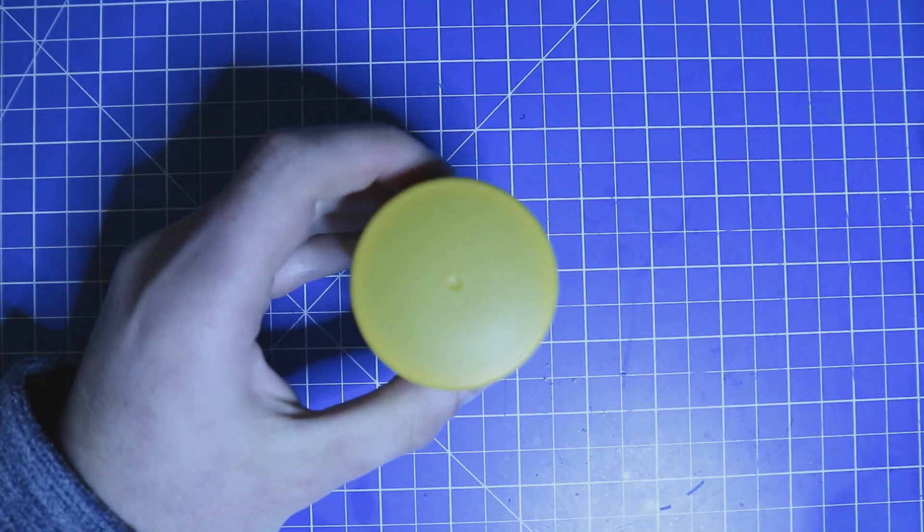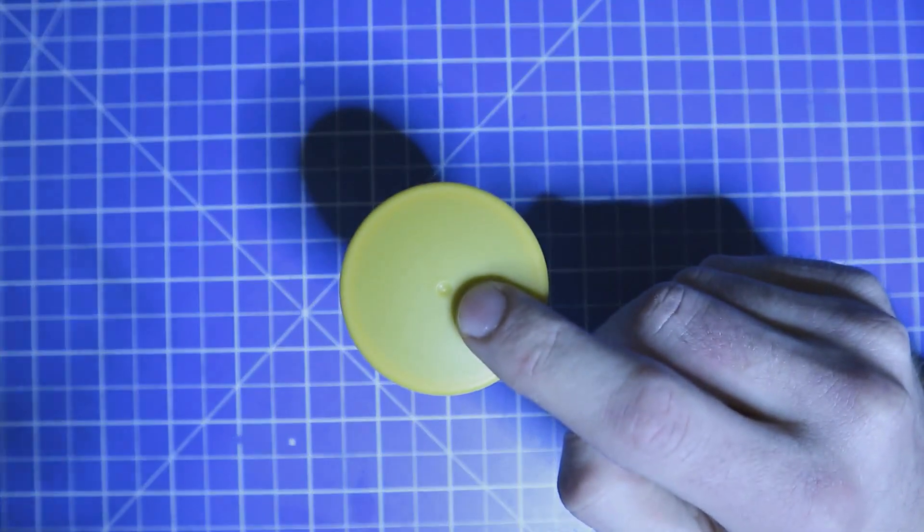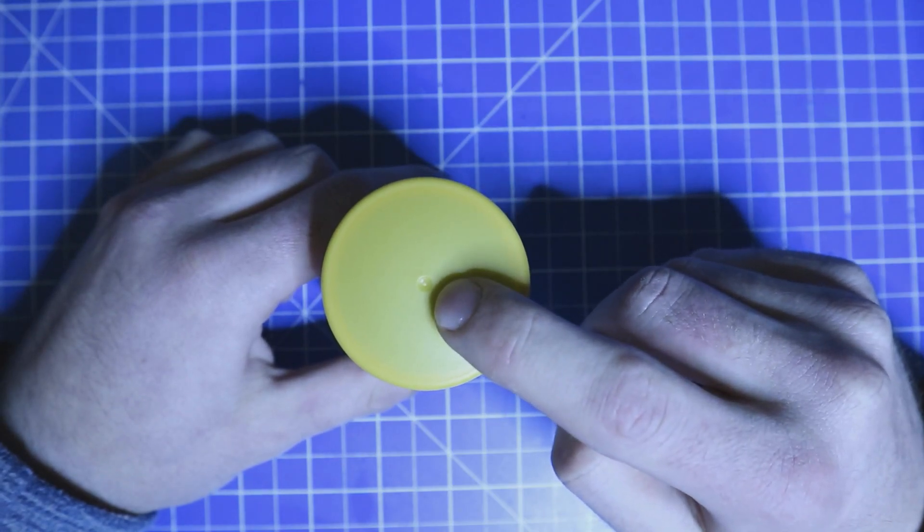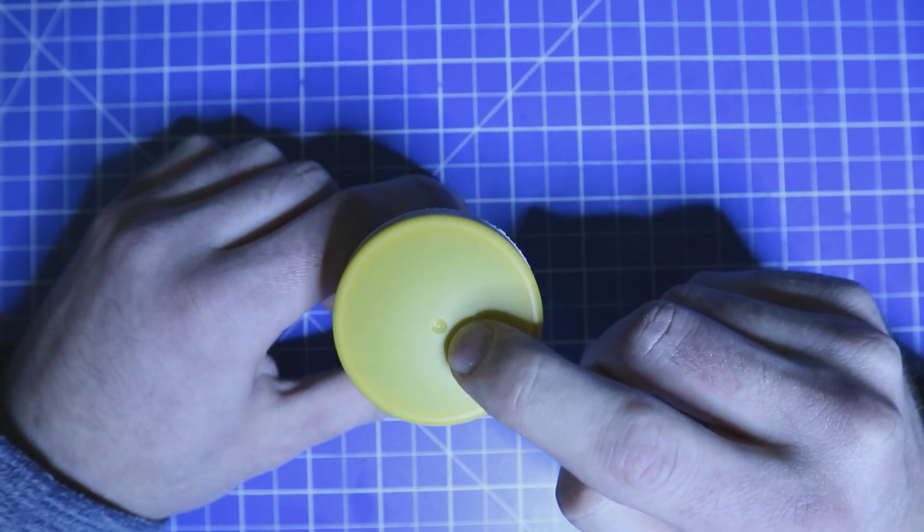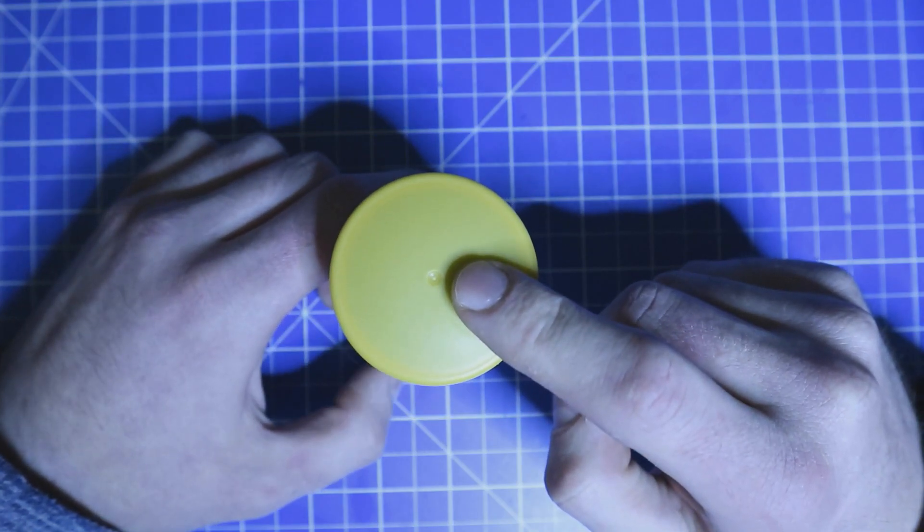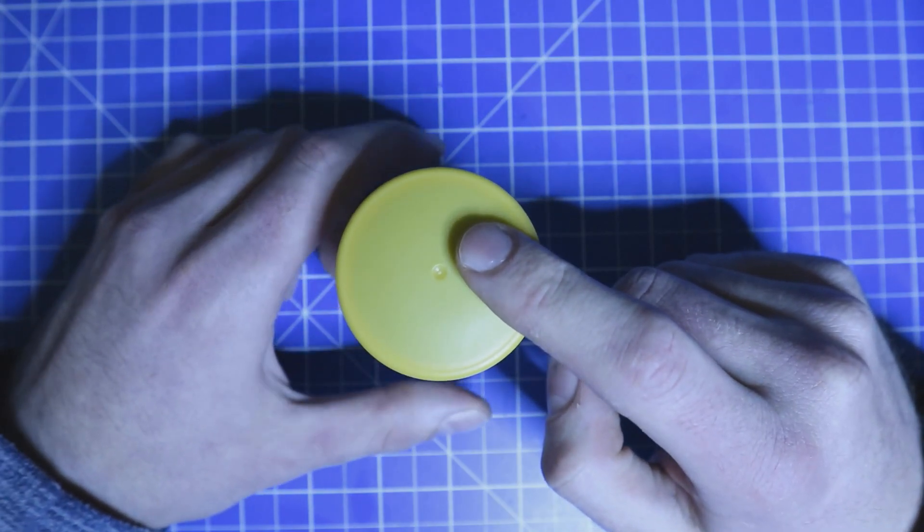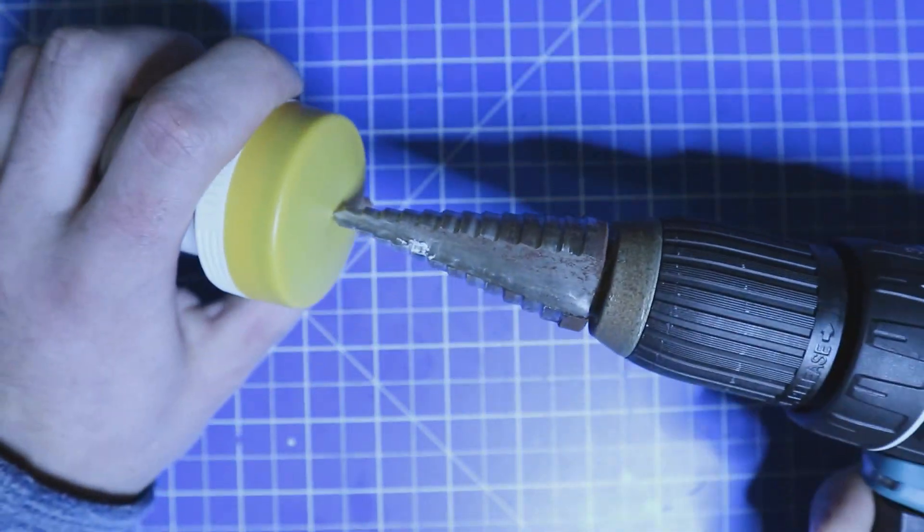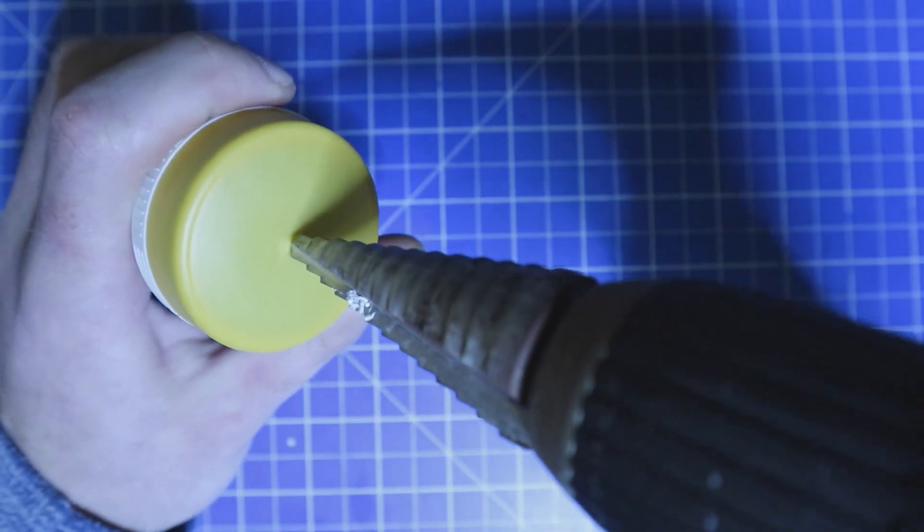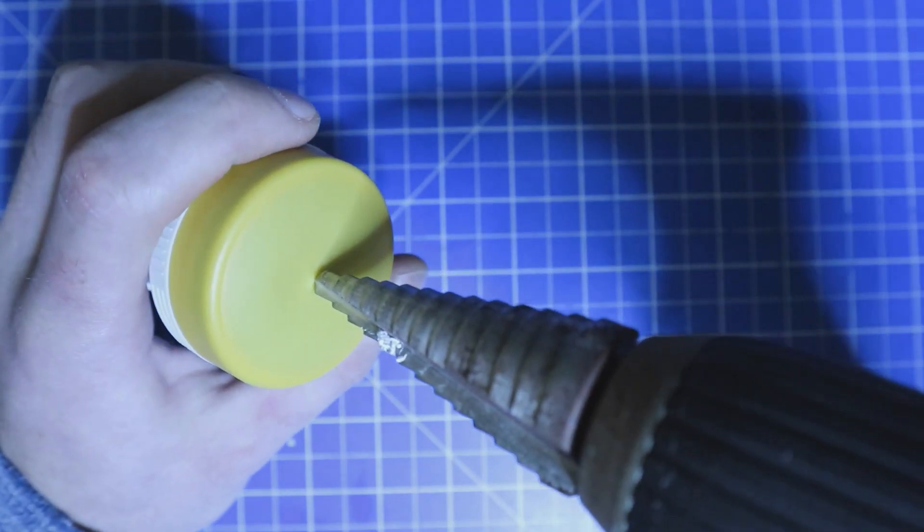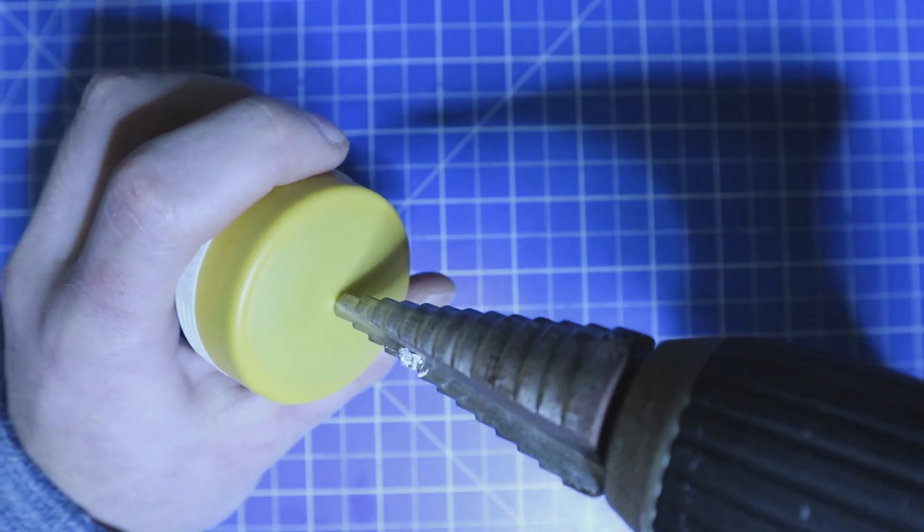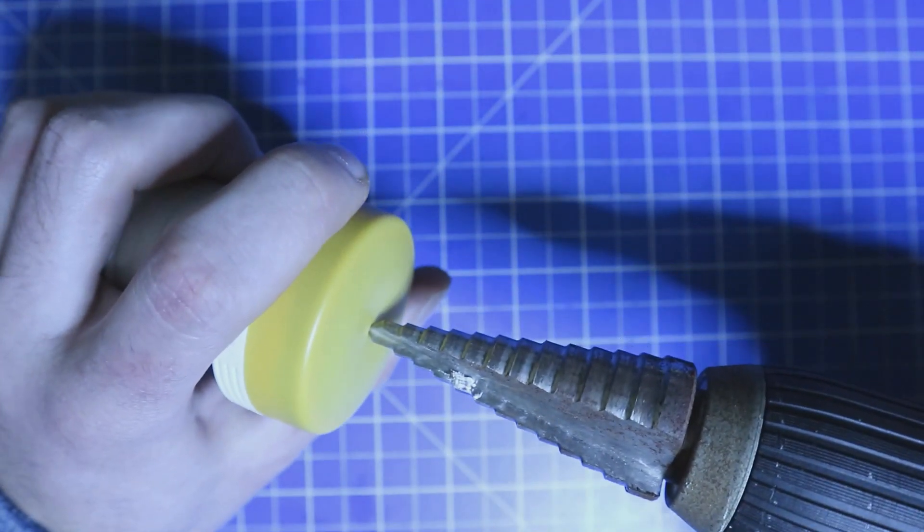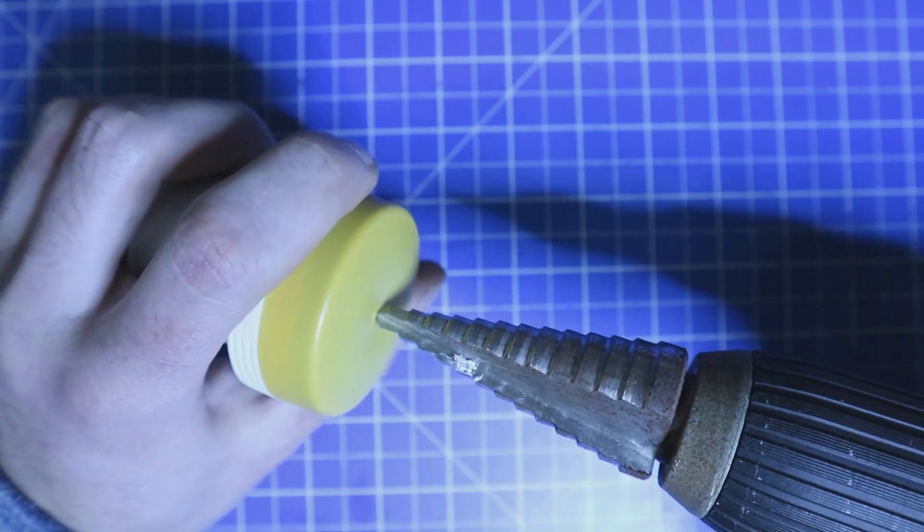The good thing with this enclosure here with the lid is that there is already a center mark from the fabrication process. Therefore we just need to apply the step drill into there and drill it until the 22 millimeter diameter is reached.